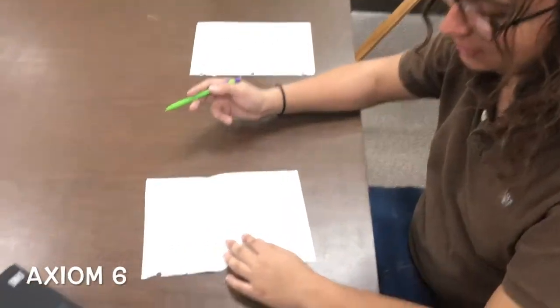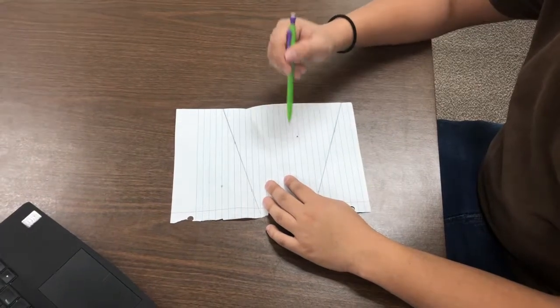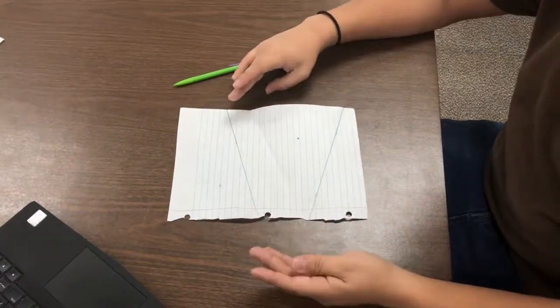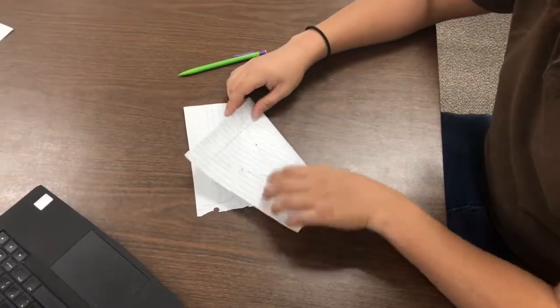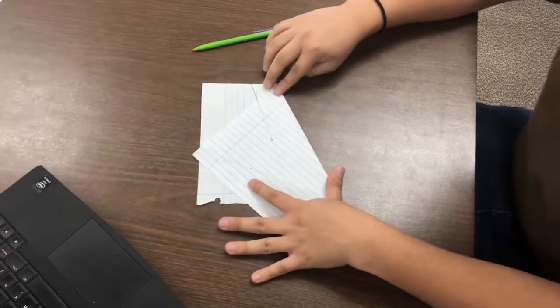Axiom six. Given two points and two lines, there's a fold that takes one point onto one line, the other point onto the other line. Shown as such. You take this over and you fold it, you can see it sort of lines up with the lines and the points.